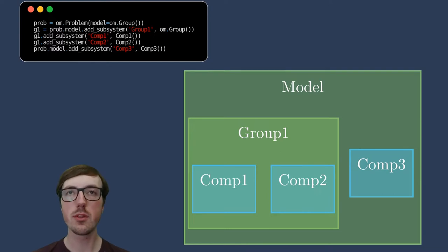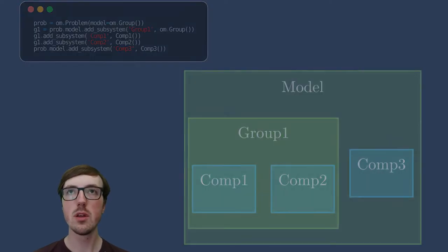So then we have component three also within the model here. After looking at the tree view and this nesting doll, let's take a look at an n-squared diagram for this exact same model. Here we have components one and two, again as part of group one, and component three at that model level.